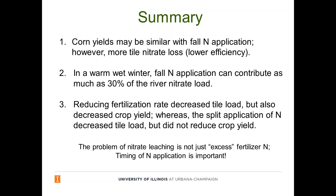In summary: corn yields may be similar with fall N, however more tile loss results — that's lower efficiency. In a warm, wet winter, fall N application can contribute as much as 30% of the nitrogen river load, as we clearly saw in our long-term dataset, corroborated by the replicated tile study. Reducing fertilization rate decreased tile load but also decreased crop yield, whereas split application decreased the tile load without reducing crop yield. Nitrate loss from agricultural fields is not simply a matter of excess or over-application — it's critically about the timing of when fertilizer is applied.